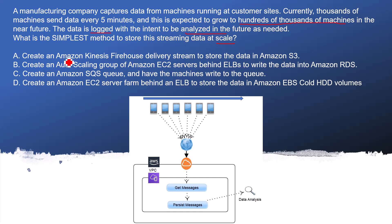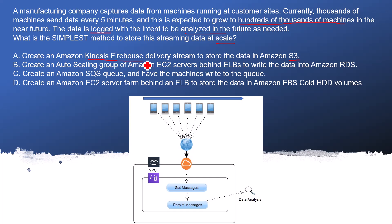Option A: Create an Amazon Kinesis Firehose delivery stream to store the data in Amazon S3. Here S3 matches our criteria because it is unstructured data we can directly save to S3, and Amazon Kinesis Firehose is meant for it. So this could be the correct answer.